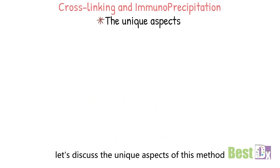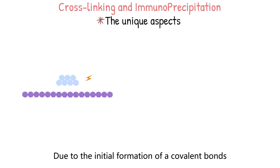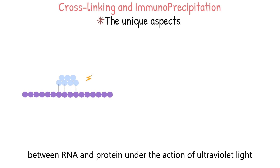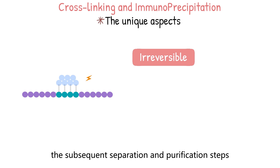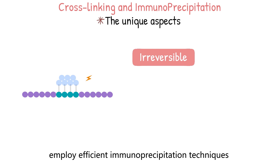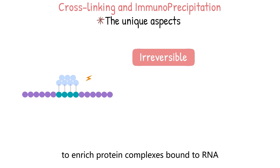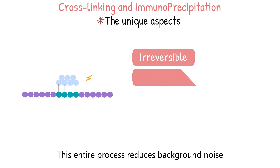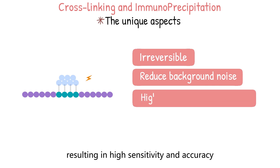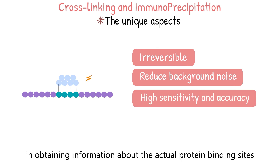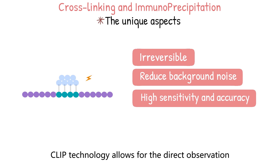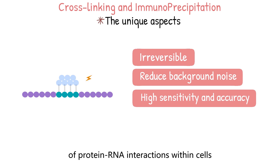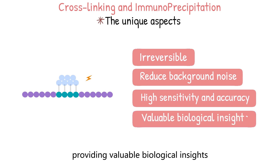Now, let's discuss the unique aspects of this method. Due to the initial formation of covalent bonds between RNA and protein under UV light, which is irreversible, the subsequent separation and purification steps employ efficient immunoprecipitation techniques to enrich protein complexes bound to RNA. This entire process reduces background noise, resulting in high sensitivity and accuracy in obtaining information about the actual protein-binding sites on RNA. Moreover, CLIP technology allows for the direct observation of protein-RNA interactions within cells, providing valuable biological insights that reflect true biological phenomena occurring in living organisms.